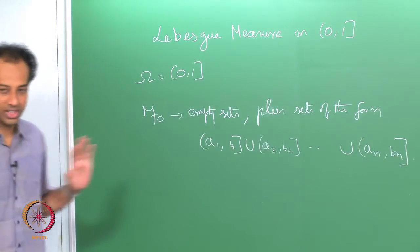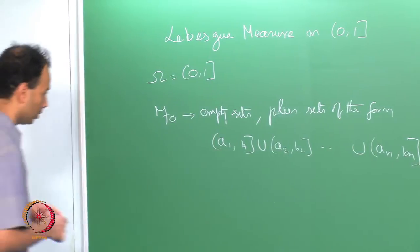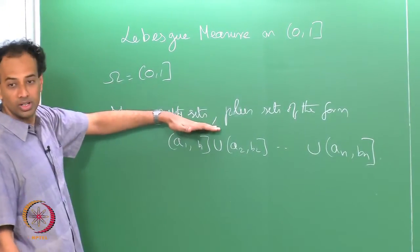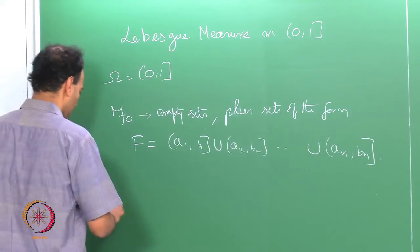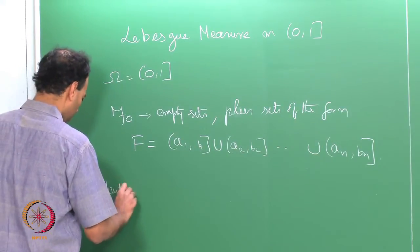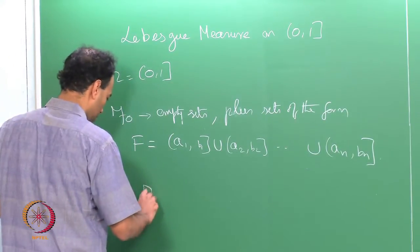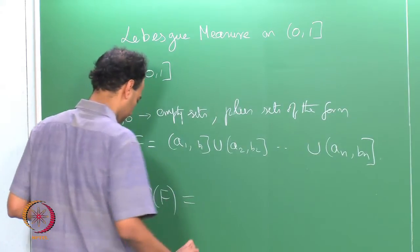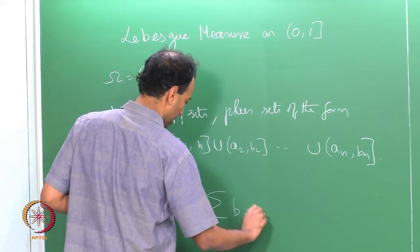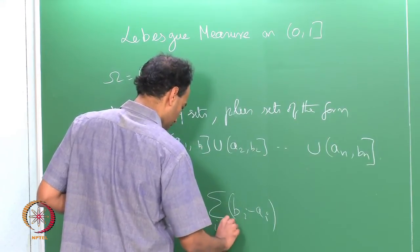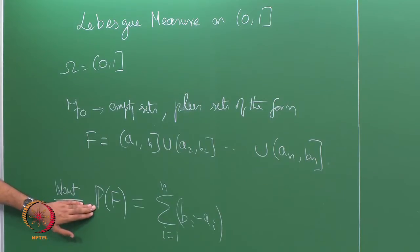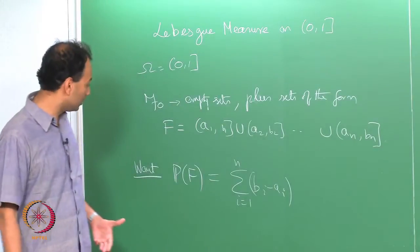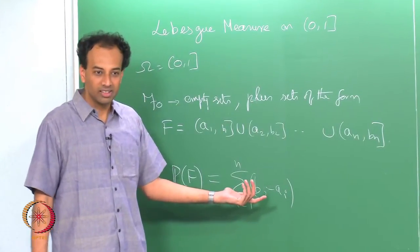These three facts are very important and we will use them very soon. On sets of this form, I want a probability measure such that the probability of a set F equals the sum of (b_i minus a_i) for i equals 1 through n. I want the measure of intervals to be b_i minus a_i — that is really what I want.